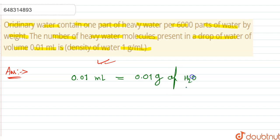So now if we state that 6000 grams is given, 6000 gram of ordinary water corresponds to one gram of heavy water.